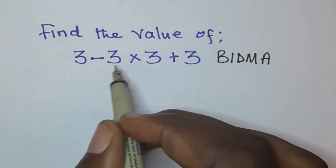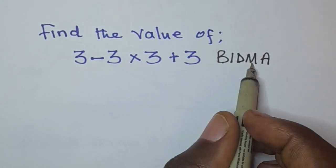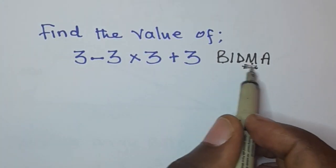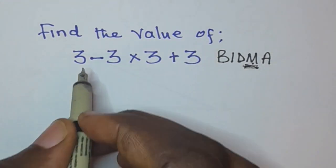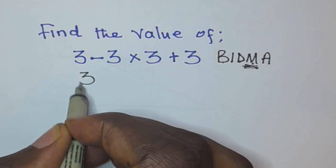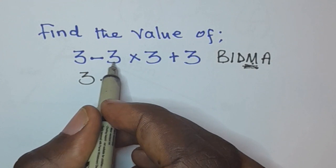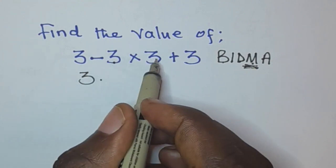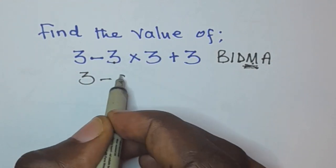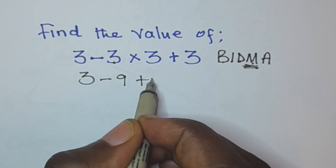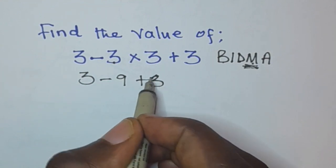Division we don't have division. We have multiplication. So we are going to start by multiplication. So we're going to have 3 then negative 3. So say negative 3 times 3 is negative 9 then plus 3. This 3 here.